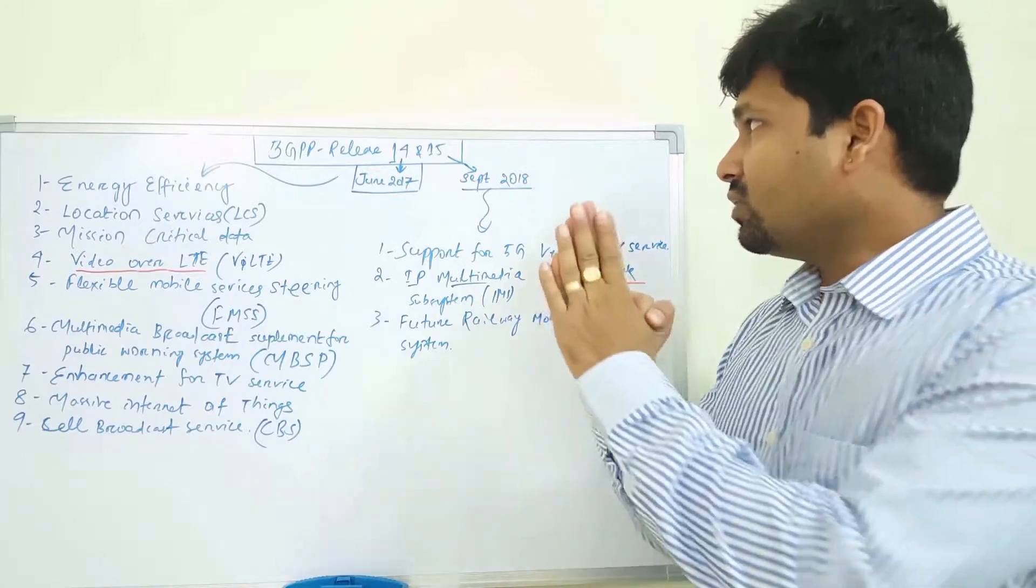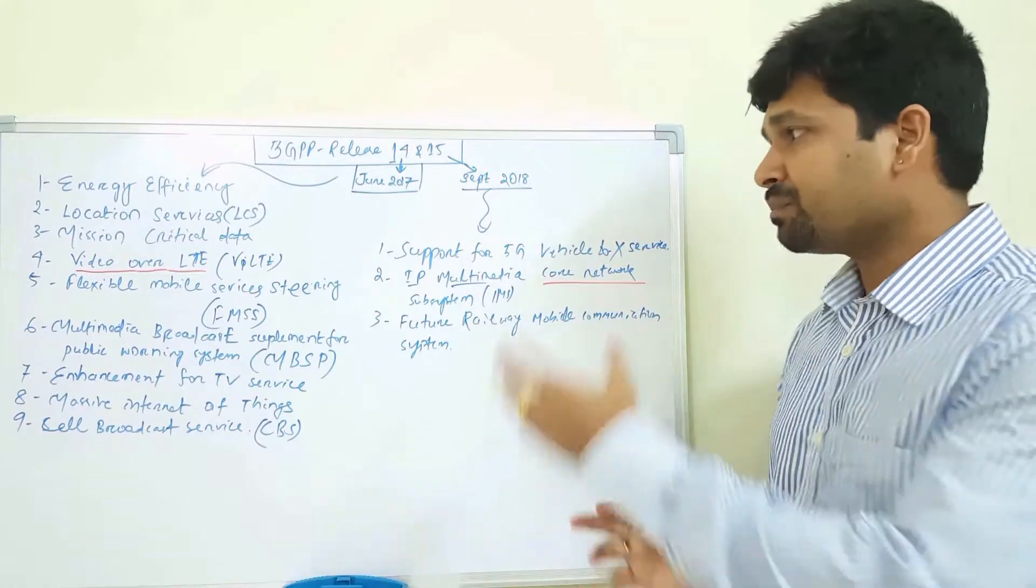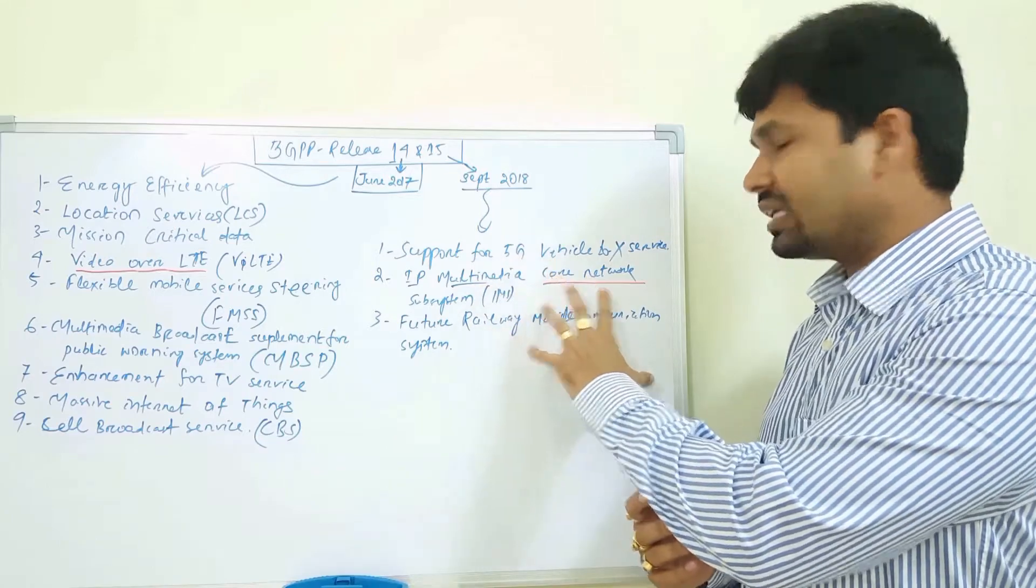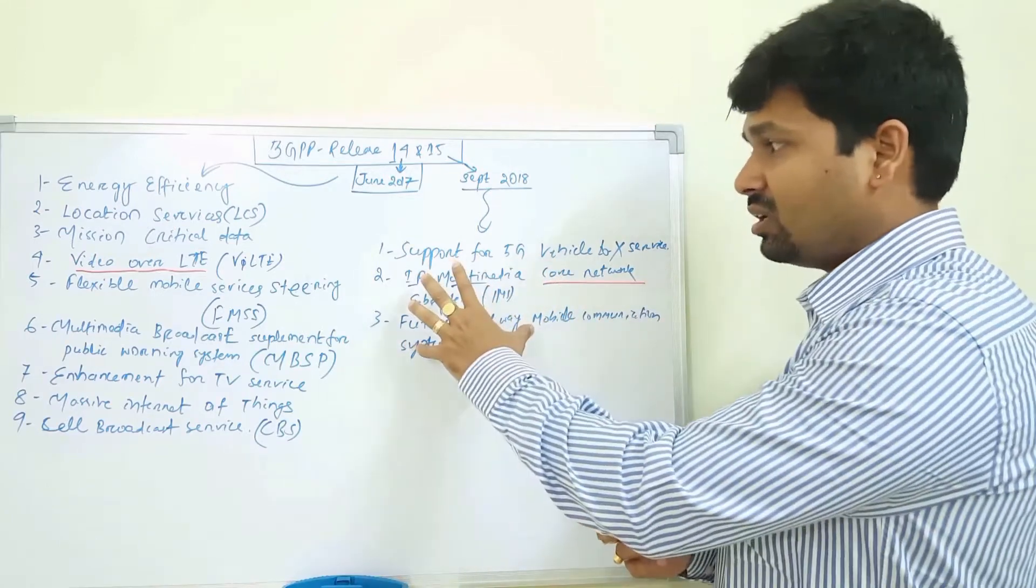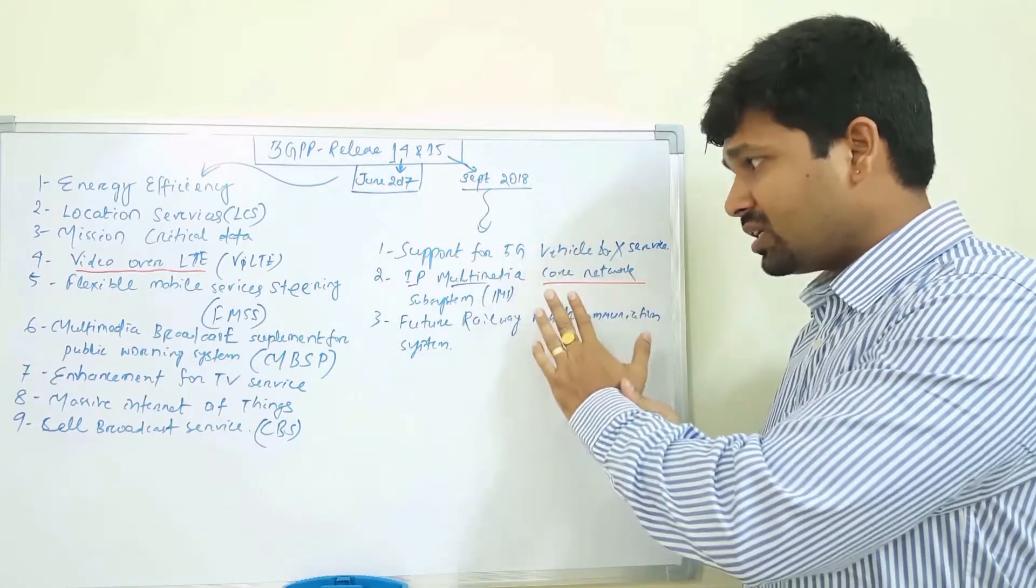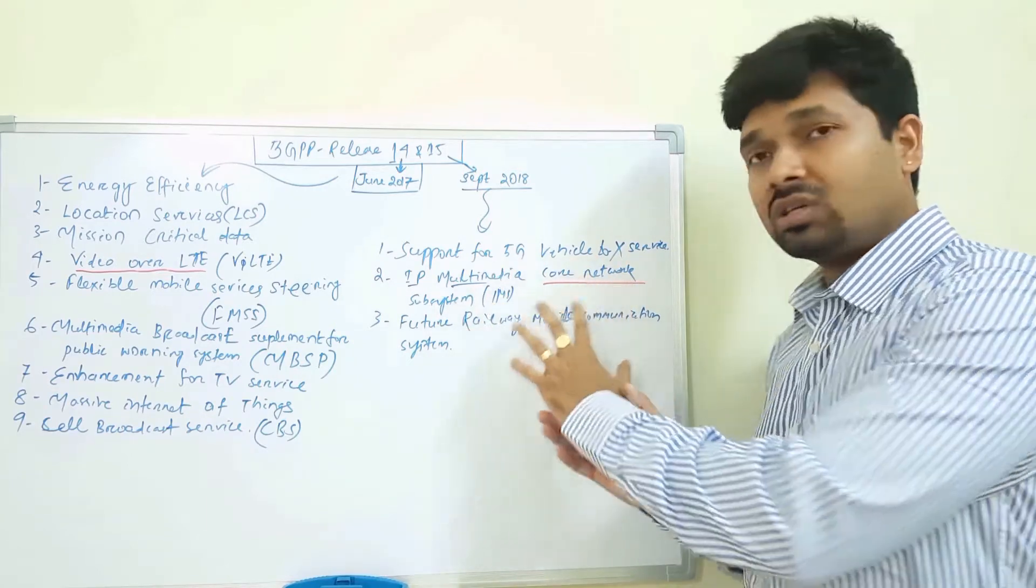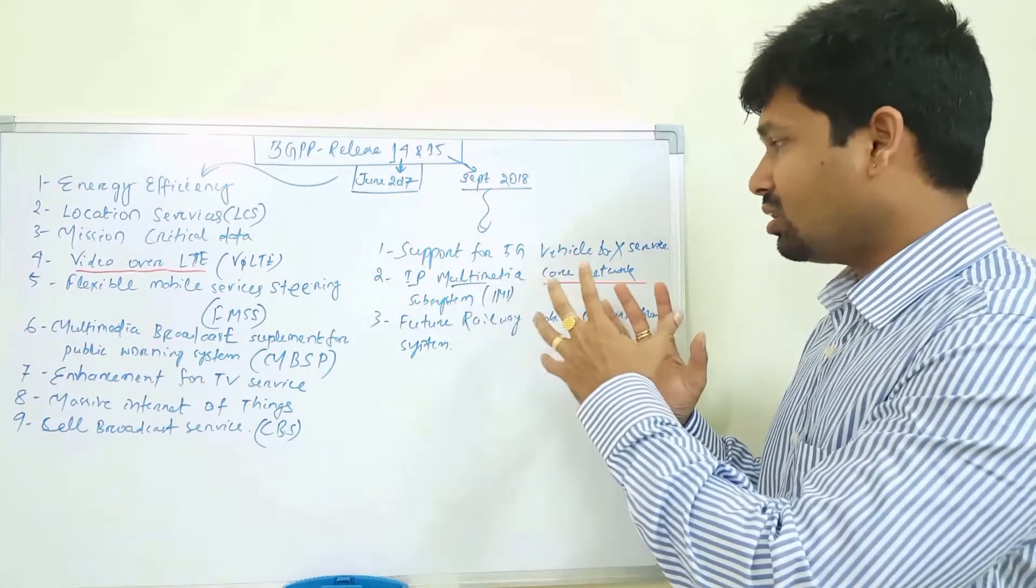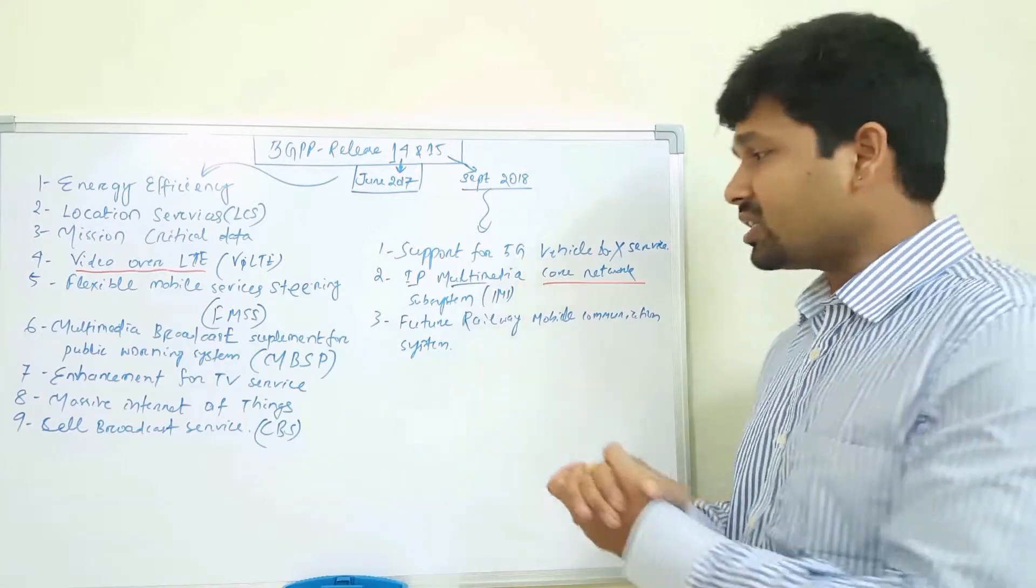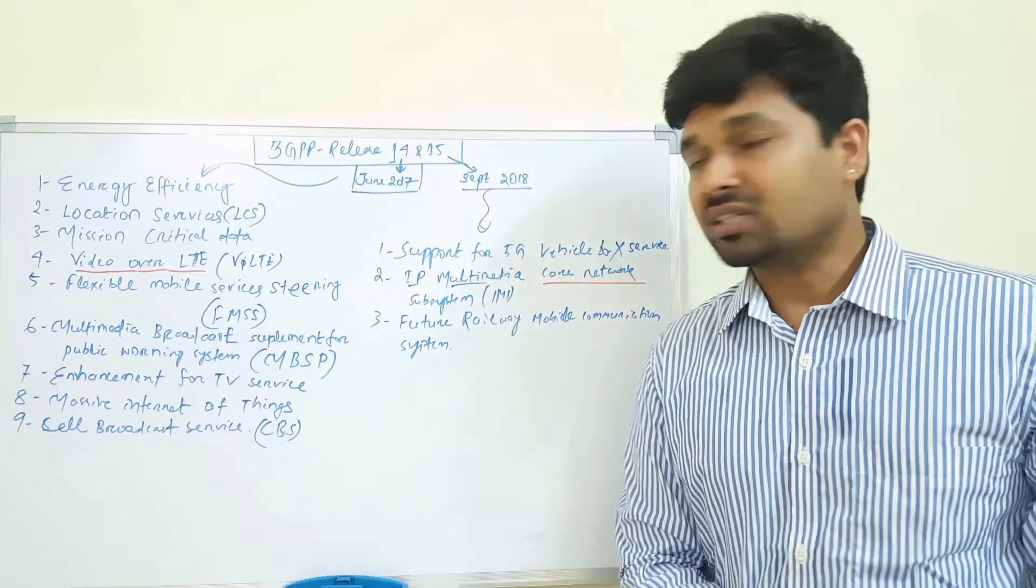In Release 15, which is expected to come in September 2018, they are currently working on these key features: support for 5G, vehicle to X services, IP Multimedia Core Network System. Earlier it was only IP Multimedia System, but now it's core network, so this IMS has been developed with some new features that will come to know in September 2018. And the last one is Future Railway Mobile Communication System, which sounds pretty interesting.